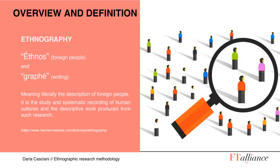The etymology of ethnography goes back to ancient Greek, from 'ethnos', which means foreign people, and 'graphe', which means writing. So literally, ethnography means the description of foreign people, or foreign society. This presupposes two things: first, that people engaged in ethnography must be mobile to come into contact with foreign society; and second, they require media such as writing, drawing, and images to record their observations. So ethnography is the study and systematic recording of human cultures and the descriptive work produced from such research.